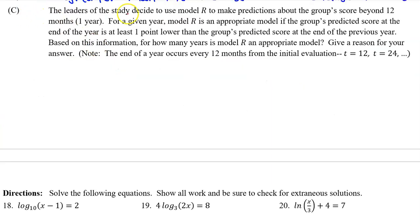Part C: The leaders of the study decide to use model R to make predictions about the group's score beyond 12 months. Model R is appropriate if the group's predicted score at the end of the year is at least one point lower than the previous year's predicted score. For how many years is model R appropriate? Note: the end of a year occurs every 12 months — so t=12, t=24, and so on.